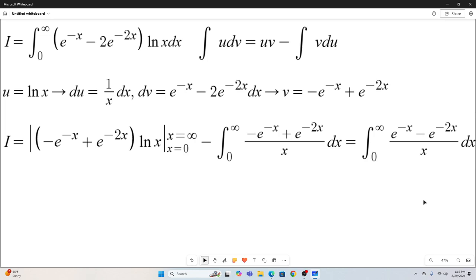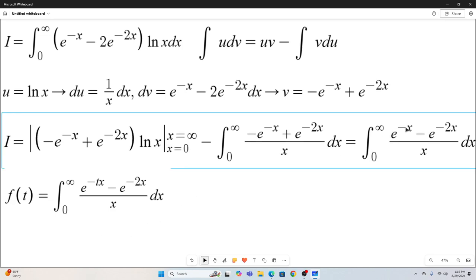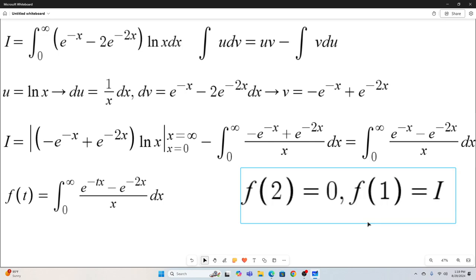So we still can't solve that integral using standard techniques. So now we're going to have to use Feynman integration. So the first step we're going to do is define a function in terms of t equal to this integral right here. So all I did was added a t in front of that x right here. And we'll note that if we plug in two for t, we'll get zero because we'll just end up with e to the negative 2x minus e to the negative 2x, which is zero. And if we plug in one, we recover our original integral.